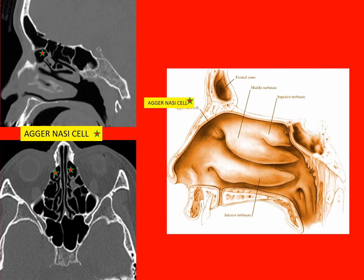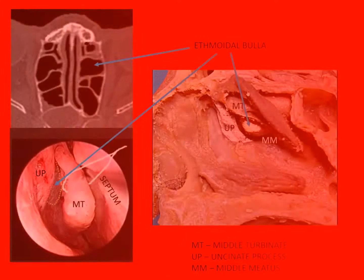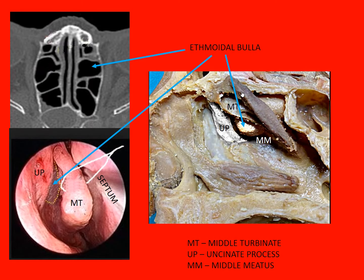Amongst the anterior group of ethmoid cells, two types need to be specially described: the agger nasi cells and the bulla ethmoidalis. The agger nasi cells lie immediately anterior and superior to the insertion of the middle turbinate. The ethmoidal bulla is the most constant and usually the largest air cell in the anterior ethmoid. It sits like a bleb, attached to the lamina papyracea. Occasionally it is poorly developed, or it may be large and fill the middle meatus like a balloon.